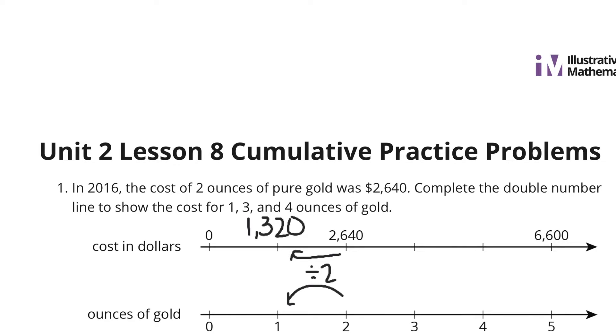And once I know that, 1,320 for 1 ounce of gold, I can use multiplication to help me solve the rest of these. For example,